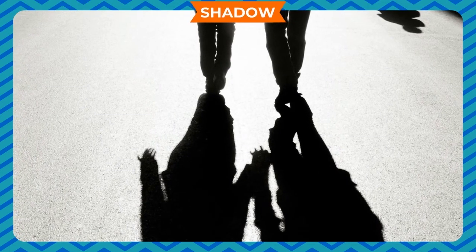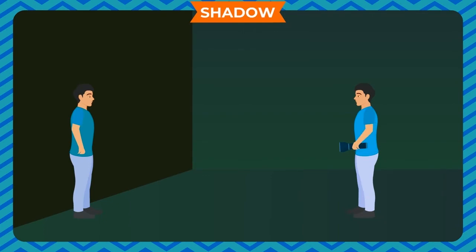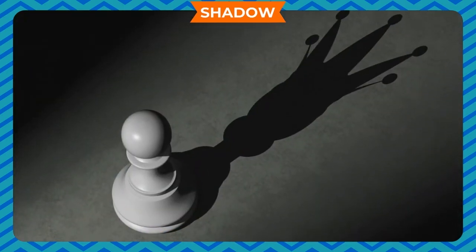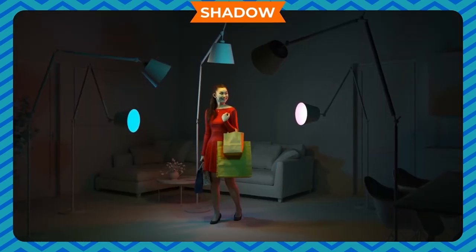Shadow. A shadow is a dark area which forms when an object blocks the path of light from a light source. Ask your friend to stand in front of a wall in a dark room. Take a torch and focus it towards your friend. You will see a black image of your friend on the wall — this black image is called the shadow. A shadow forms only when there is a surface behind the object, meaning a screen is necessary to form a shadow. The shadow of an object is always black in colour, regardless of the colour of the object.